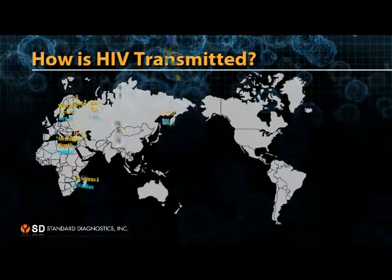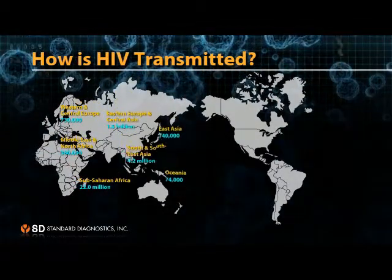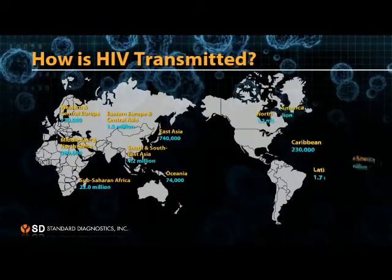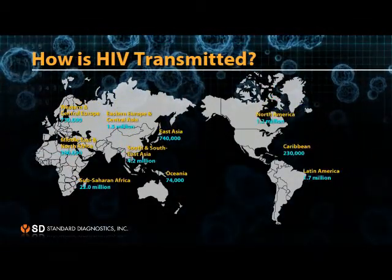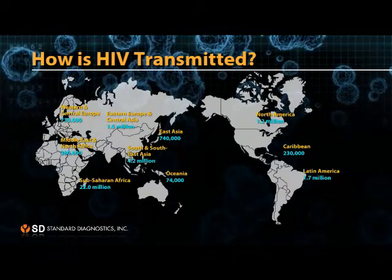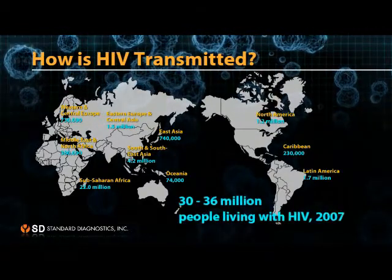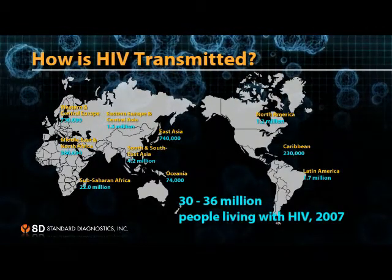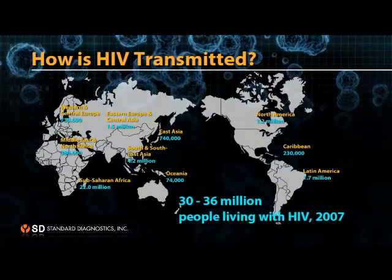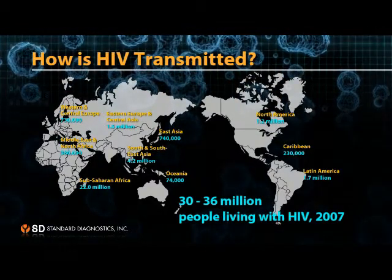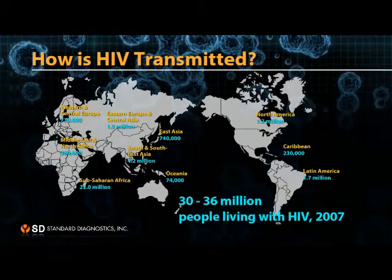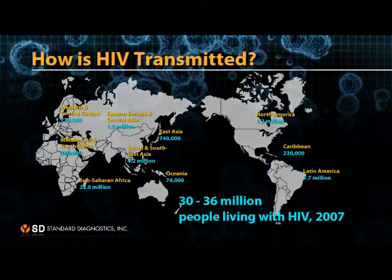HIV infection is a worldwide epidemic affecting people everywhere. A total of between 30 and 36 million persons live with HIV. Most of these live in Africa.